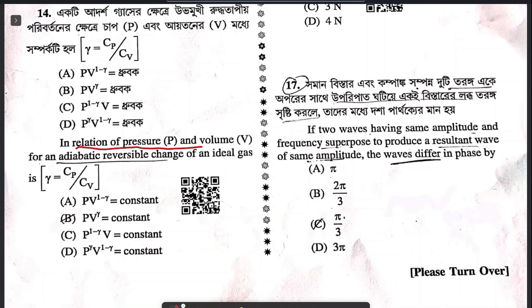Question 14: the relation of pressure and volume in an adiabatic process for an ideal gas — very simple — PV^γ = constant. So this is the answer.